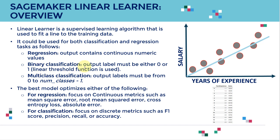In binary classification, we only have two outputs: either zero or one. For multi-class classification, the output must be between zero and num_classes minus one. For example, for self-driving cars, you want the car to classify different traffic signs — stop sign, yield sign, 30 km/h, 50 km/h, and so on. That's a type of multi-class classification problem.